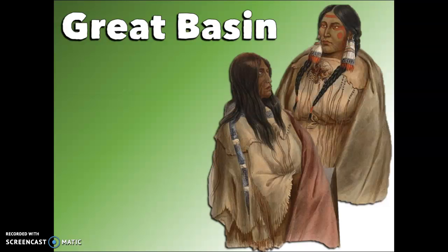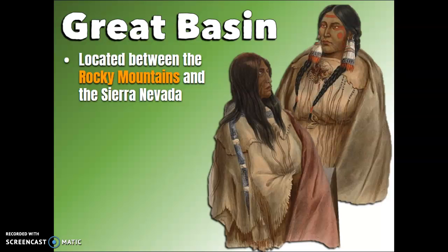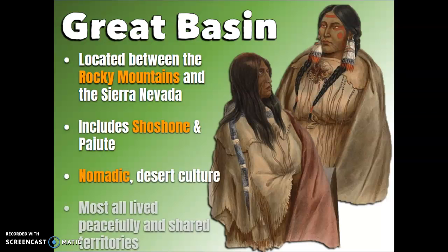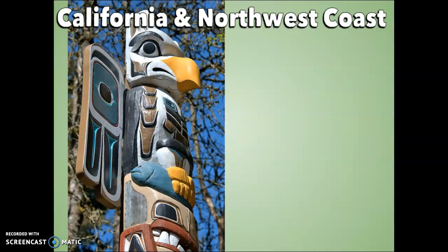That takes us to the Great Basin Native Americans, located between the Rocky Mountains and the Sierra Nevada. It includes the Shoshone and Paiute. They are nomadic with a desert culture and mostly lived in peace and shared territories. We have one more slide to go through, so pause as needed.